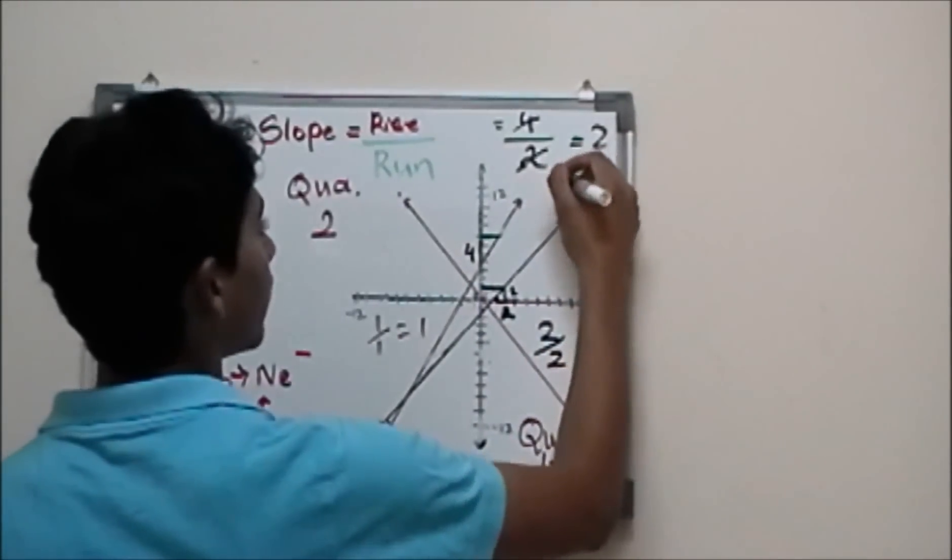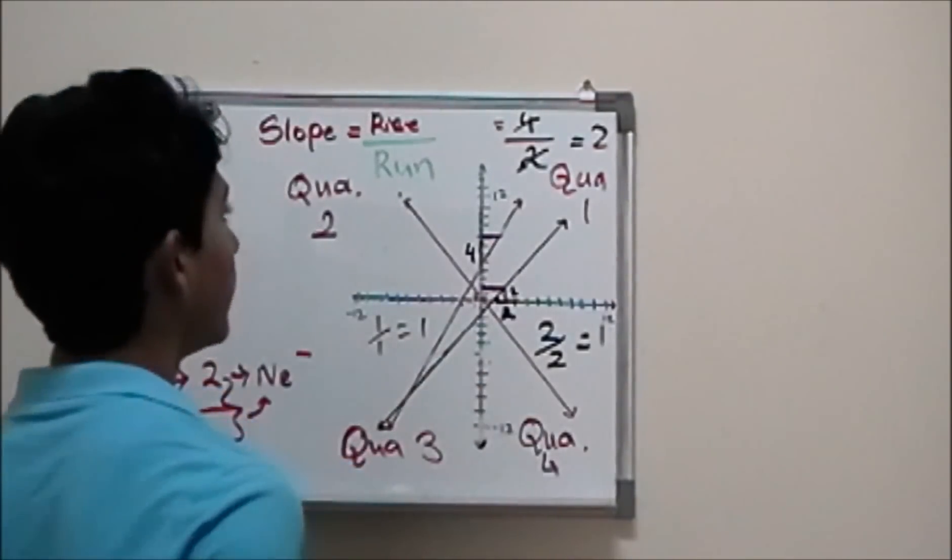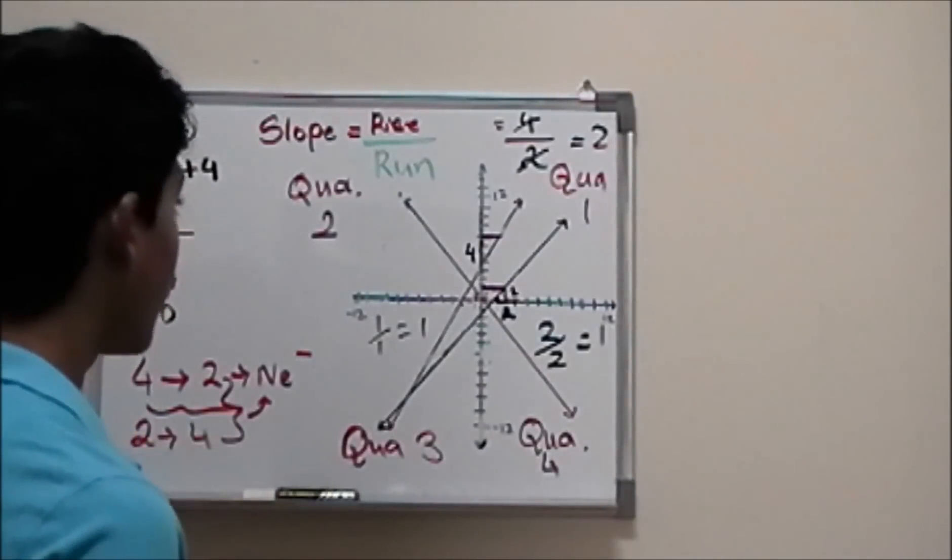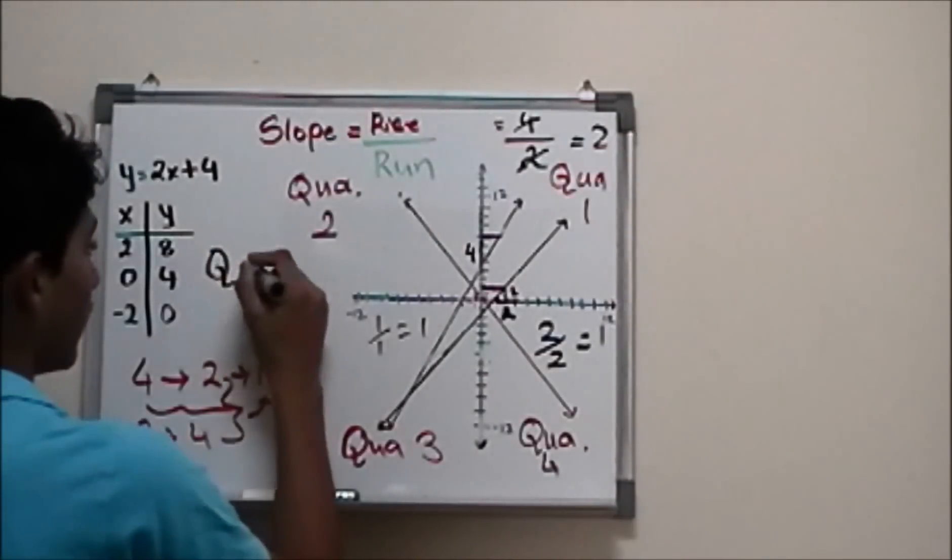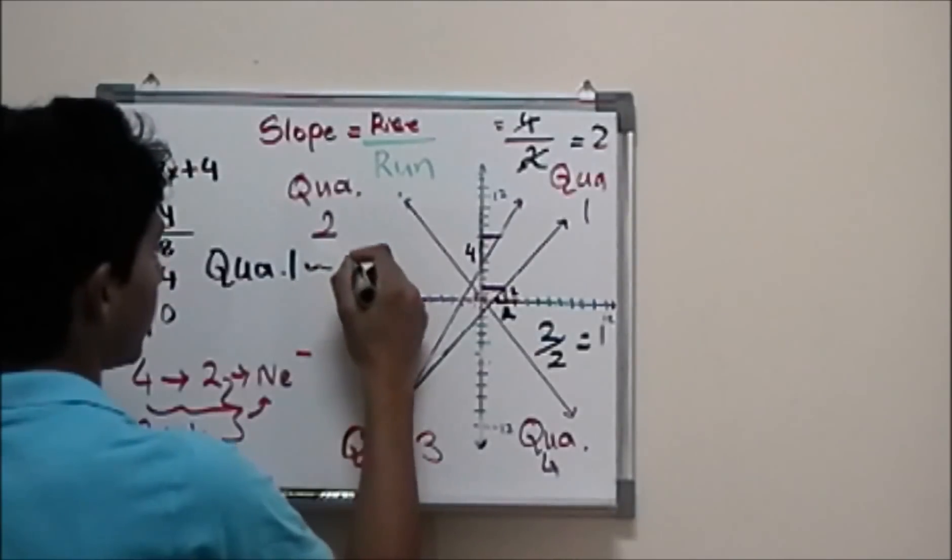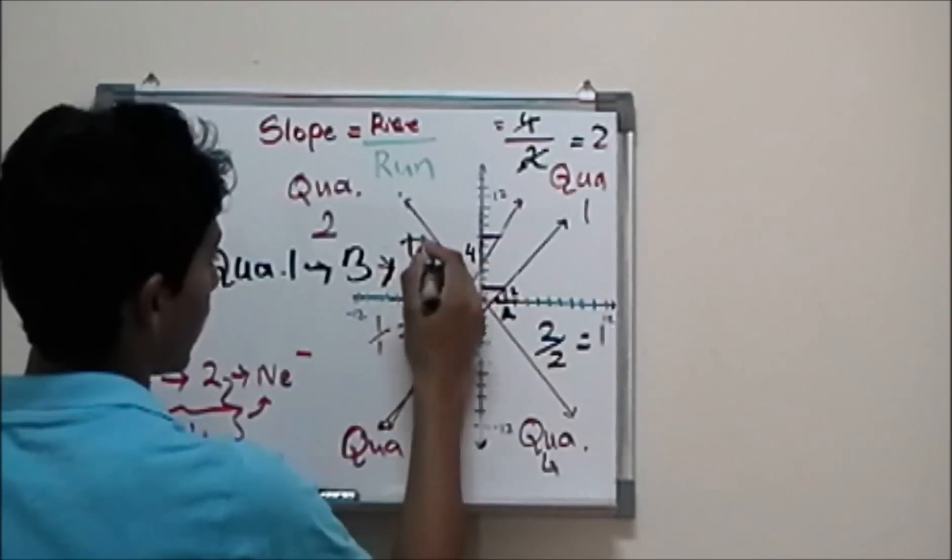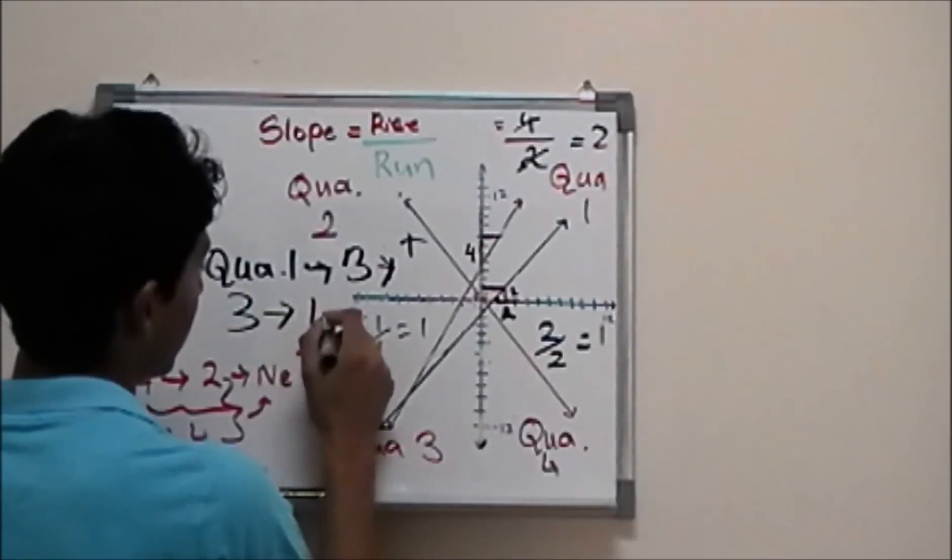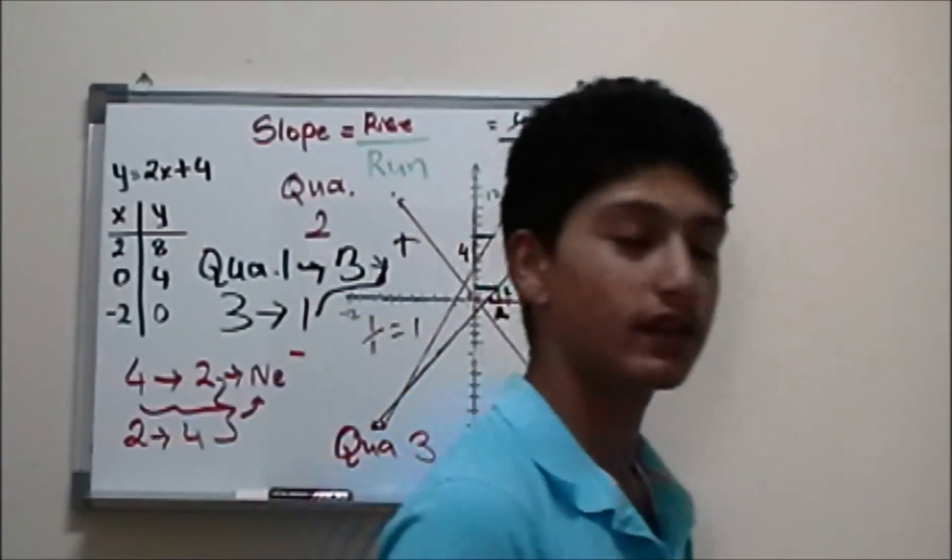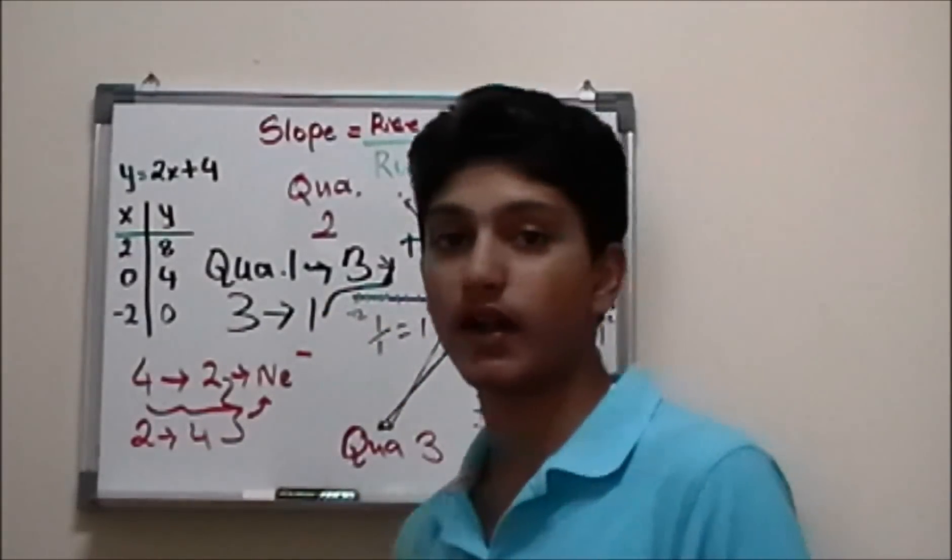Now, from quadrant one and quadrant three, if a line goes from quadrant three to quadrant one or quadrant one to quadrant three, the line is positive. One, two, three, positive. And from three to one, it's still positive. And this is how we determine if the line is negative or positive.